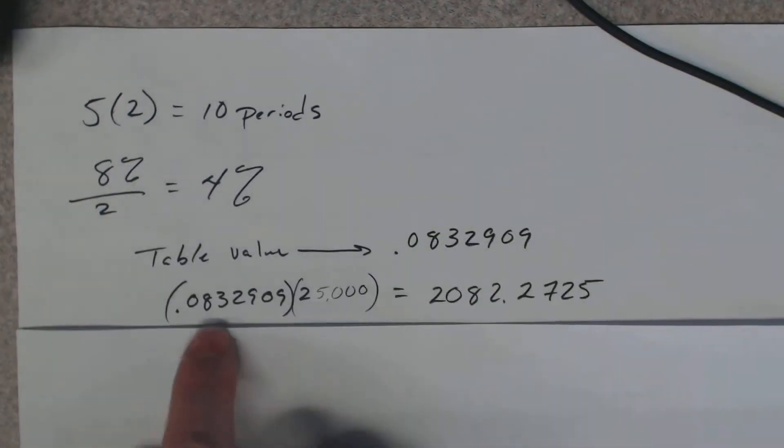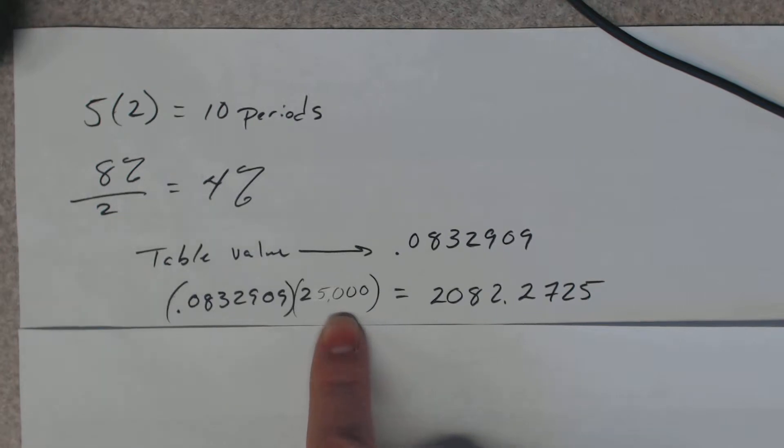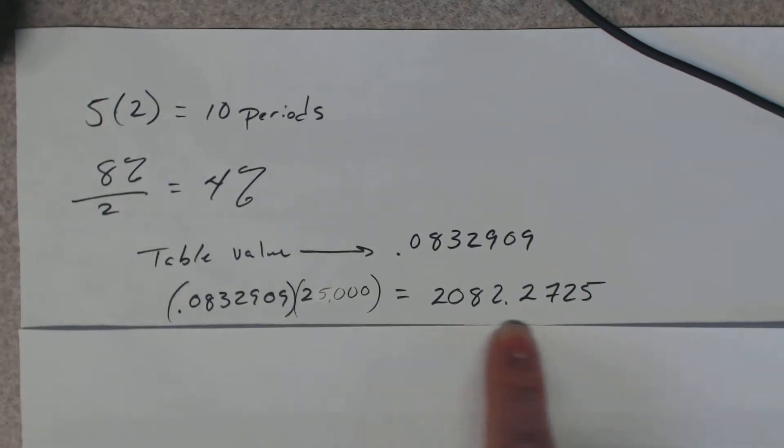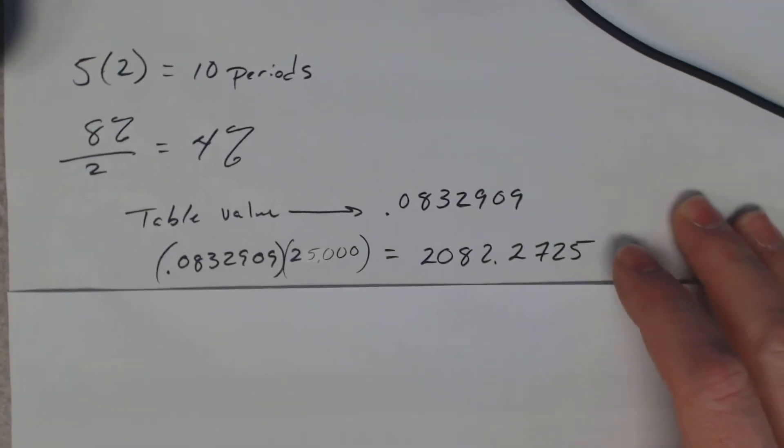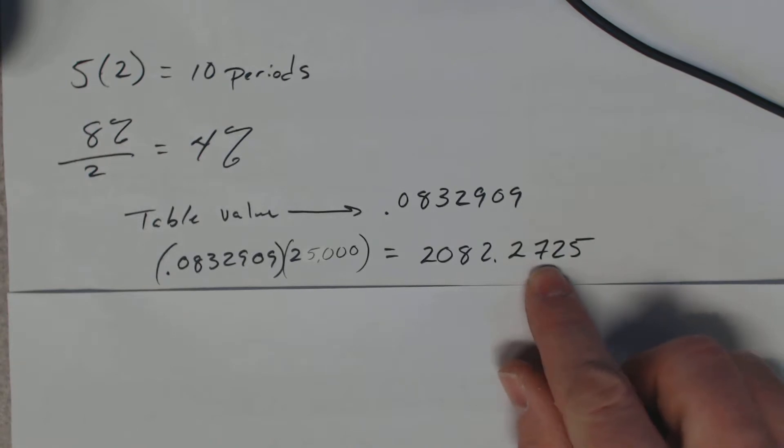Then we're going to take that table value times how much he wants. So that's $25,000. It gives us this number in the calculator. Now note that we have some extra stuff here. So we want to round this. We're going to round the nearest penny.